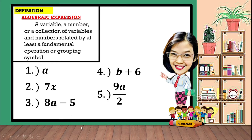For number 5, this is read as the ratio of 9a and 2. 9a has multiplication because it is read as the product of 9 and a. And when we say ratio, the operation there is division.